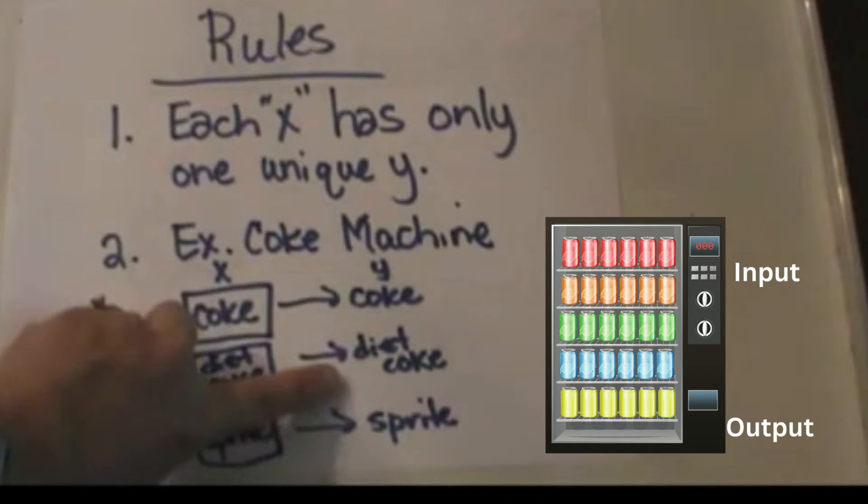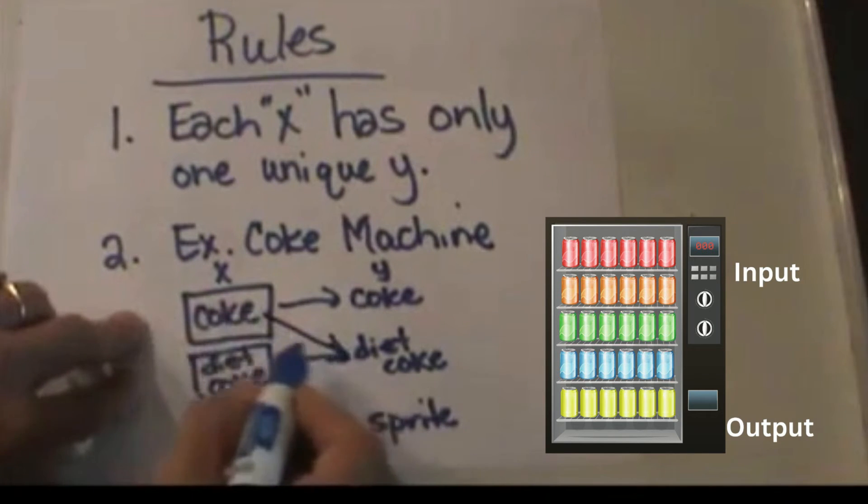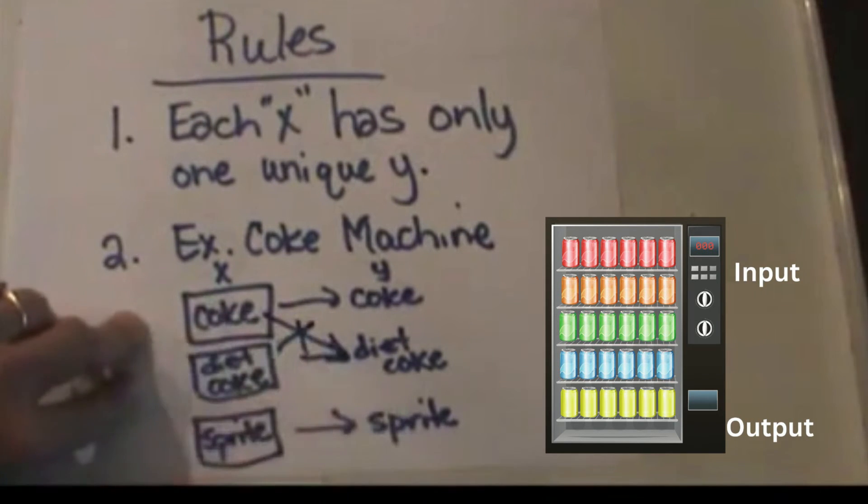Can you push coke and get a diet coke out? No. That means it's not functioning correctly, therefore it's not a function. So a coke button cannot produce a different output other than coke.